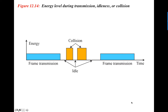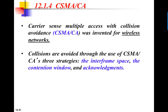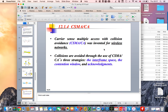To summarize the energy levels: if there is a normal frame transmission, the energy is normal. If there is a collision, the energy is almost double because there are two signals combined, which is abnormal. If nothing is transmitted, the medium is idle. This was Carrier Sense Multiple Access with Collision Detection.